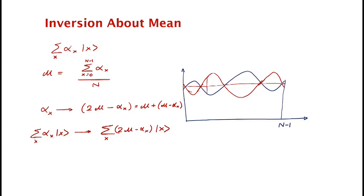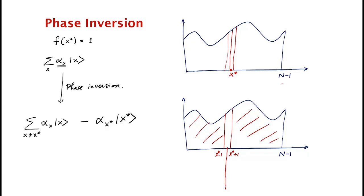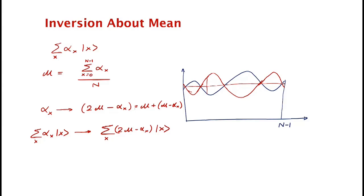It should not be a priori clear that inversion about the mean is a unitary transformation, let alone that it can be implemented efficiently. It might be a little bit more clear that phase inversion is a unitary operation. We are going to see how to do that in the next video.